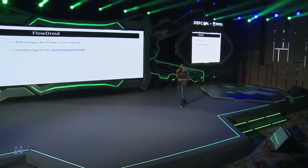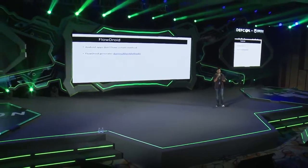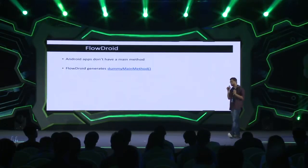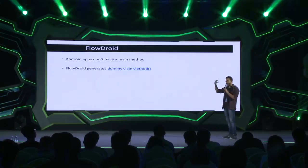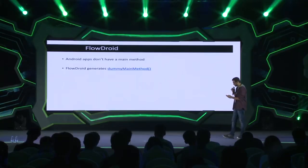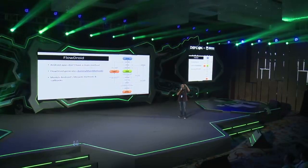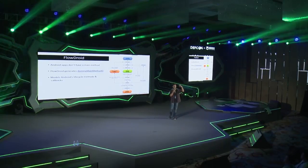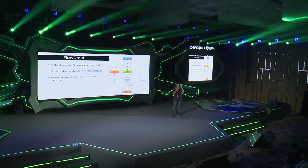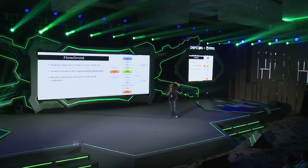There's one more tool called FlowDroid. FlowDroid allows you to generate a dummy main method. Unlike Java, Android applications do not have a main method, so to start your data flow analysis you need a starting point. This dummy main method acts as the starting point. It connects all Android lifecycle callbacks — since Android applications are event-driven, any callback method can be invoked. FlowDroid plugs every Android lifecycle callback into the dummy main method, so you can start your data flow analysis from a single point.